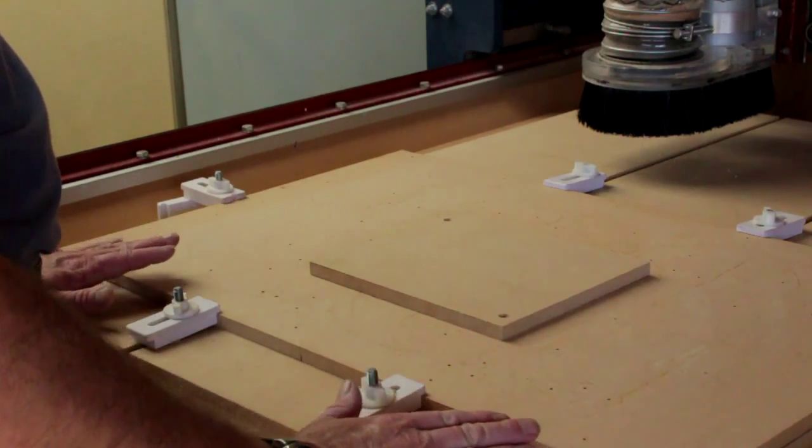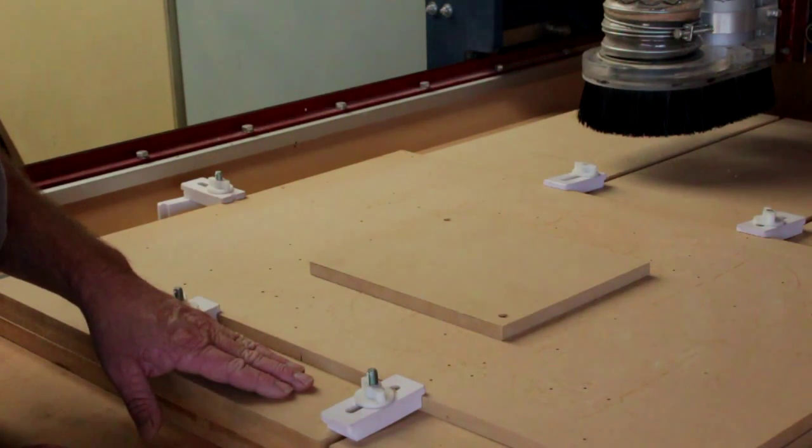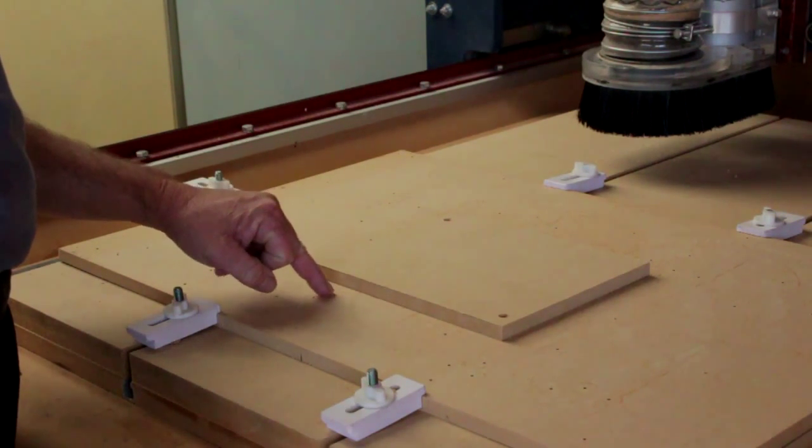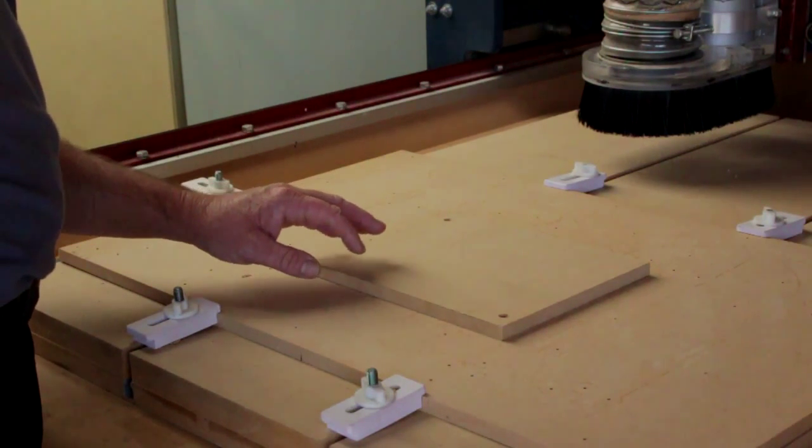Today I'm going to show you how I did this. I started by securing a sacrificial spoil board to my tabletop, then secured my stock to the sacrificial spoil board.